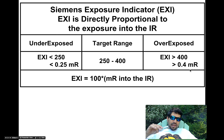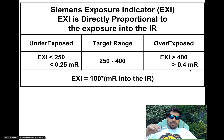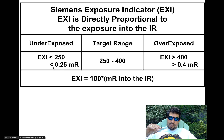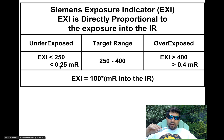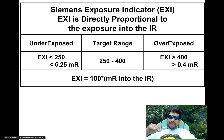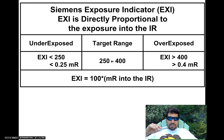Your image still looks great, but you're needlessly dosing your patients. The threshold at which they'd say it's underexposed and that mottling might become apparent would be under 0.25 MR. So if you've got an EXI under 250, you might have a mottled image. You might need to repeat it with a higher technique to get into the proper range.